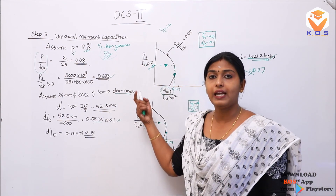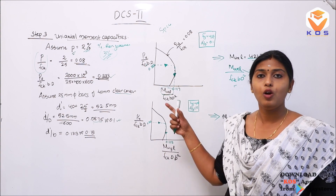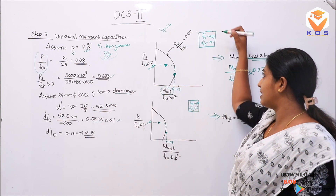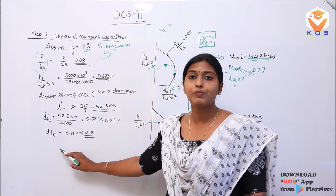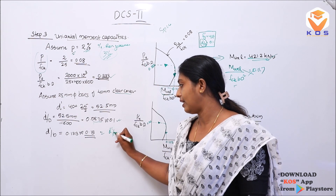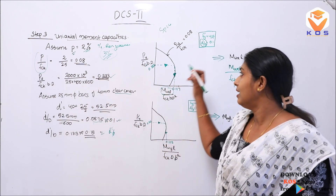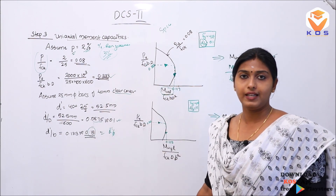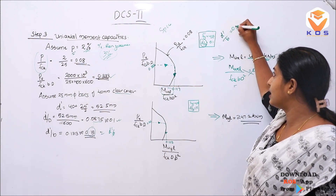Similarly, for the y-direction, we select the chart for D'/B. In the chart, D'/B = D'/D value. We calculate D'/B = 0.15, and we select the chart corresponding to D'/B = 0.15 to find the uniaxial moment capacity MuYL in the y-direction.